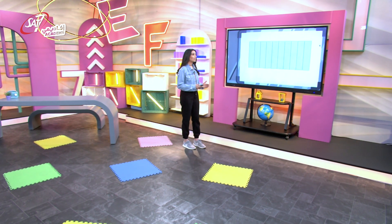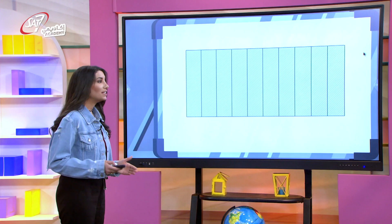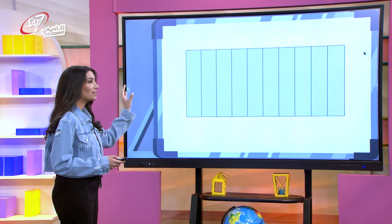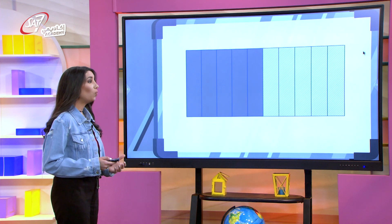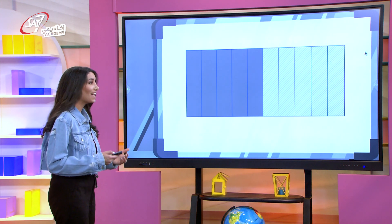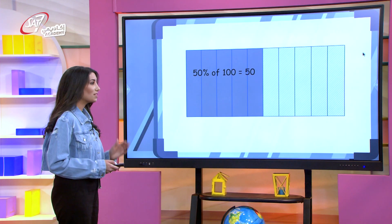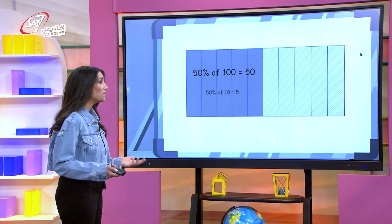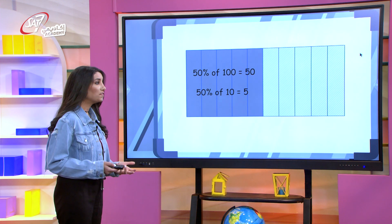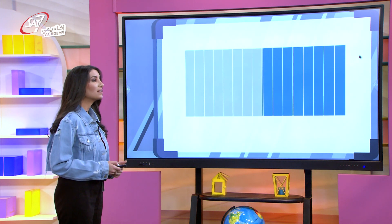Now let's say you've collected 100 shells, and you promised your sister to give her 50% of them. How much would she get? Let's imagine each section in this rectangle represents 10 shells. 50 out of 100 would be 50, and since 50 is half of 100, then 50% represents half the number. If you've collected 10 shells, what's 50% of them? 5, because 5 is half of 10. If you've collected 16 shells, what is 50% of them? Half of 16 is 8. So 50% of 16 is 8.